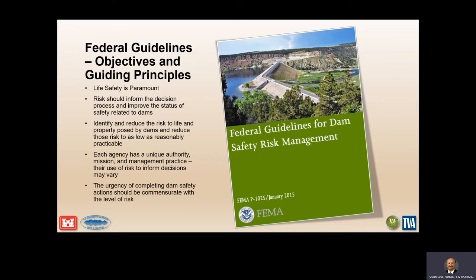The Federal Guidelines for Dam Safety and Risk Management is a really good document — about 47 pages. It contains 16 guiding principles behind what all federal agencies do to manage and assess risk. The key five are highlighted, and the most important one is that all agencies shifted to a life-safety-paramount principle. You'll see many ways this week to calculate and evaluate risks related to life safety. At the same time, each agency has its own legal authorities, so the document provides a framework each agency can adapt to its own business processes and legal authorities.